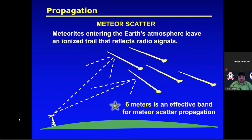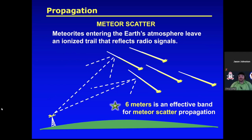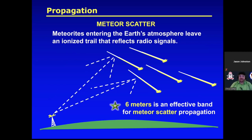Something else some operators attempt is meteor scatter. Every year in August there's a meteor shower, and you can bounce signals off the greenish trail that comes off a meteor as it's entering the atmosphere. You get a somewhat warbly sound. Six meters is very effective for meteor scatter.